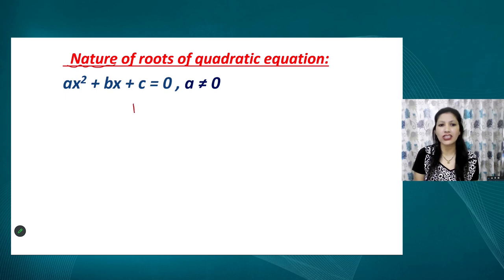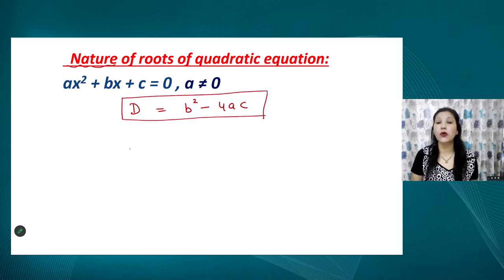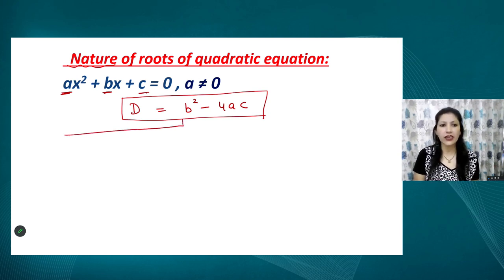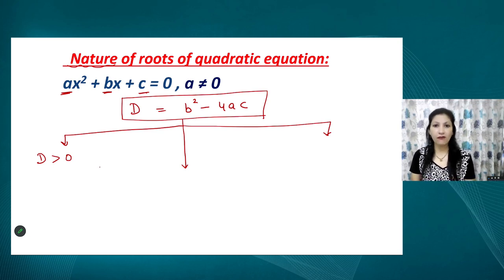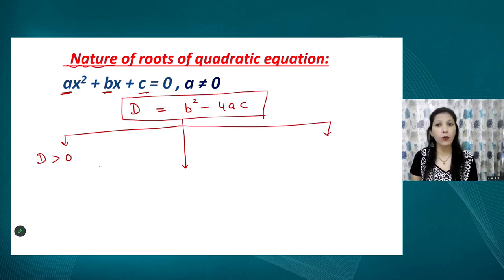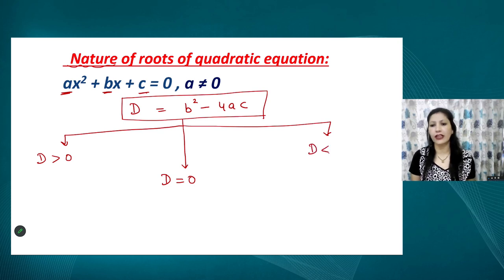Just as we discussed values like x = b/a, x = a/b, x = 3/2, these are roots of the given quadratic equation, and each root has a nature — just like human beings have a nature, roots also have a nature. This nature depends on the value of D, i.e., discriminant = b² − 4ac, where b is the coefficient of x, a is the coefficient of x², and c is the constant. Three types of answers are possible from here.